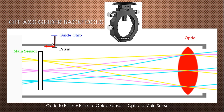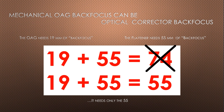Generally, prism depth adjustment is not an issue, but some off-axis guiders are designed so that changing the prism depth also changes the focus position of the guide camera — so be aware of that. It's important to remember that the off-axis guider's alignment is a mechanical requirement, as opposed to the optical requirement of the corrector or reducing optic.